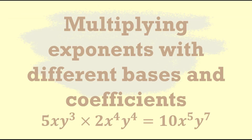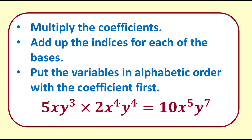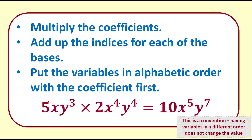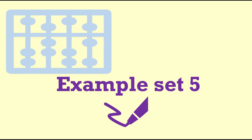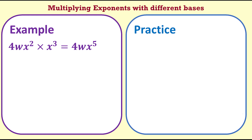Finally for this video: multiplying exponents with different bases and coefficients. We multiply the coefficients, then for each of the bases we add up the indices or exponents, remembering that when there is no exponent it means an exponent of 1. A convention is that we write the coefficient first and then the variables in alphabetical order — it is not wrong if they are in a different order but it's more difficult to identify. What can make this tricky is the different roles that the numbers play. It can be helpful to use highlighters: pink for coefficients and a different colour for the exponent of each variable, including hidden exponents or coefficients of 1.